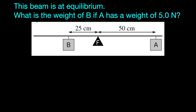Let's have a go at some calculations. This beam is at equilibrium. What is the weight of B if A has a weight of 5N? The first thing we need to remember is that weight is a force, so the force of A downwards is 5N. We must also remember that this beam is at equilibrium, so the principle of moments applies where the anticlockwise moment is equal to the clockwise moment.